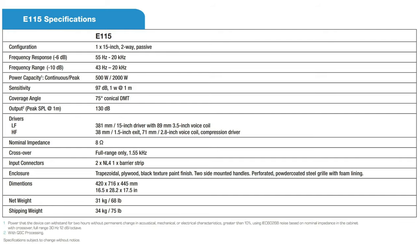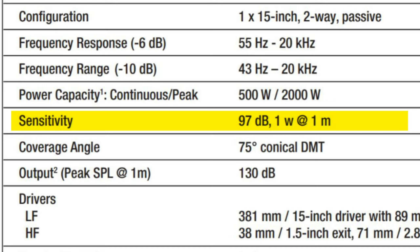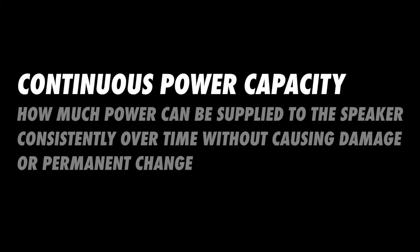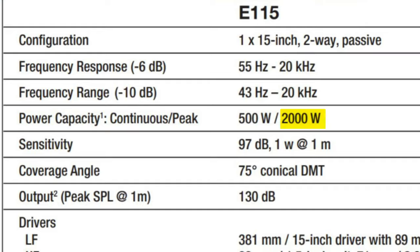This is a good time to mention a pair of specifications that help us understand how loud a speaker can get: sensitivity and continuous power capacity. The speaker's sensitivity tells us how loud the speaker will be if supplied with a given amount of power. Most often you'll see something like this — when one watt of power is applied to this speaker, you can expect 97 dB SPL measured from one meter away. The speaker's continuous power capacity describes how much power can be supplied consistently over time without causing damage. Speaker companies will often boast the much higher peak power capacity, which merely describes the maximum momentary power that can be supplied without damage. Comparing speakers based on continuous power capacity is much more useful in almost every case.